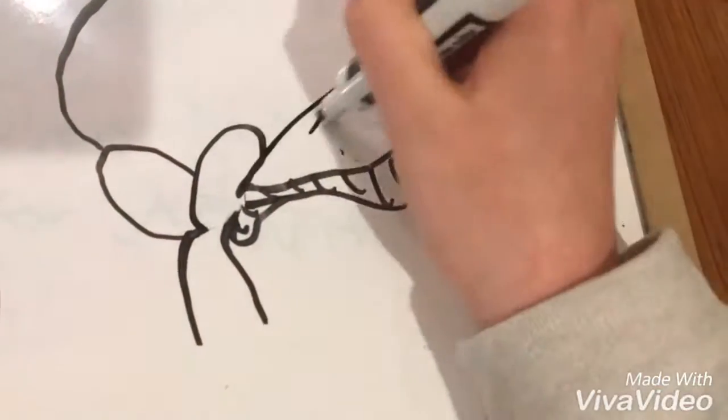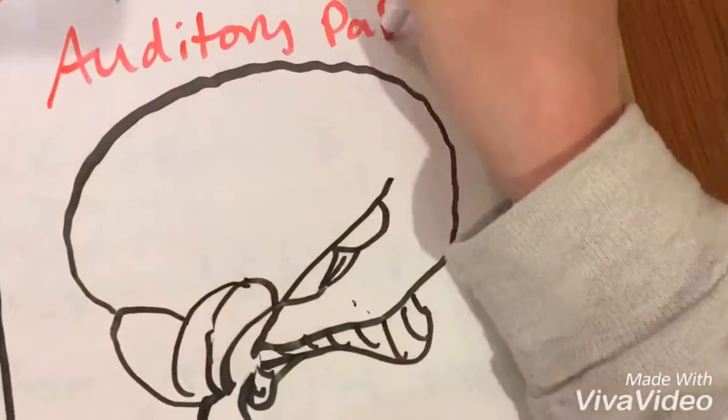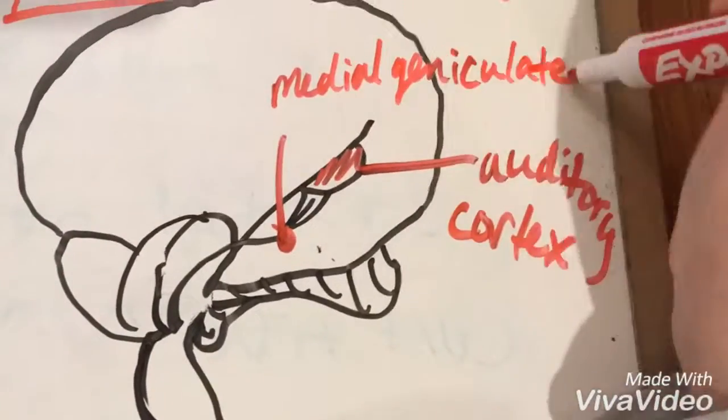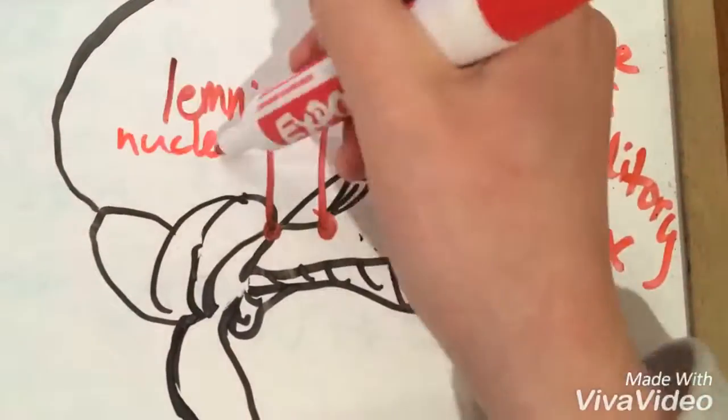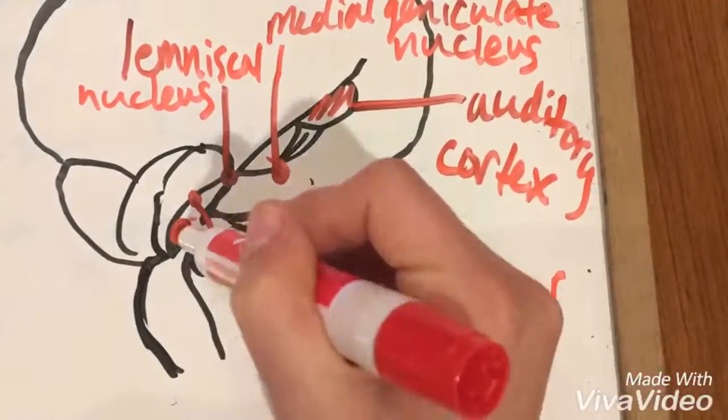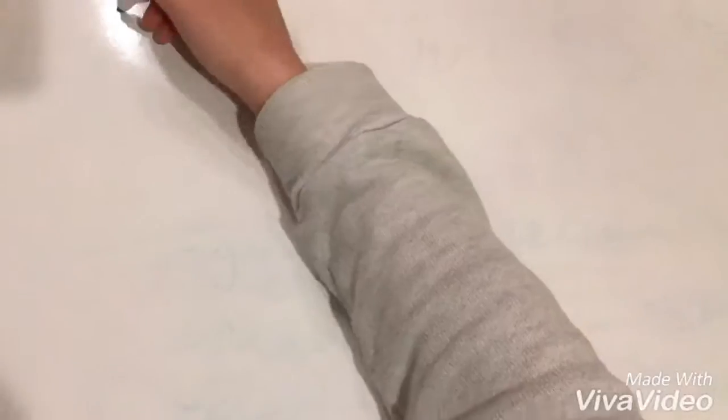Next, we have the auditory pathways of the brain. These include the auditory cortex, the medial geniculate nucleus, the lemniscal nucleus, the dorsal cochlear nucleus, and the ventral cochlear nucleus.